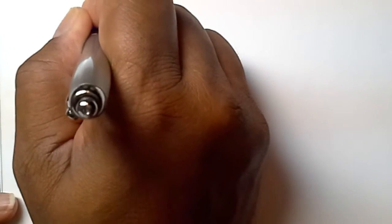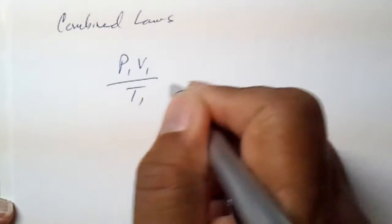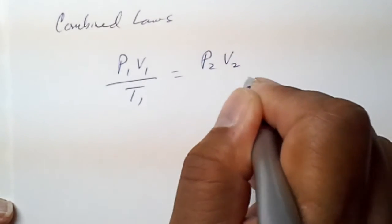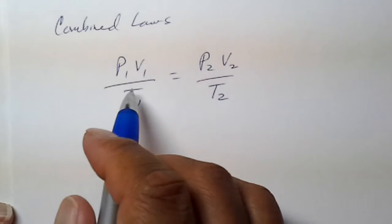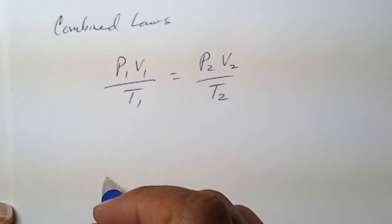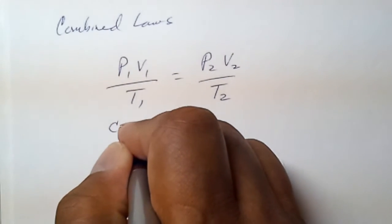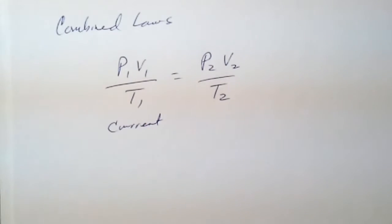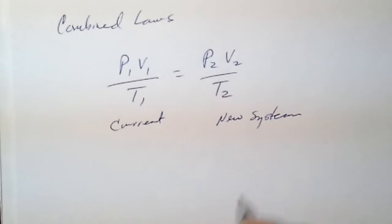The combined laws can be written in this way: P1V1 over T1 equals P2V2 over T2. Of course if we know every value except one, we can solve for it. These would be the current values and these would be the new system values.